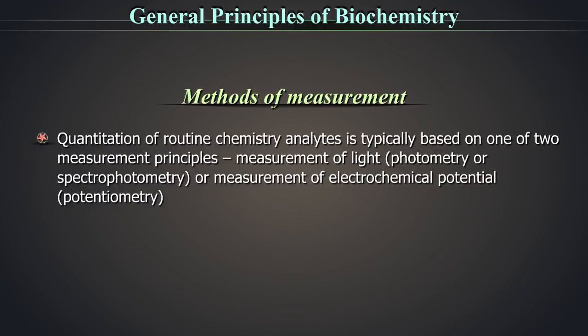Quantitation of routine chemistry analytes is typically based on one of two measurement principles: measurement of light, which is photometry or spectrophotometry, or measurement of electrochemical potential, also known as potentiometry.